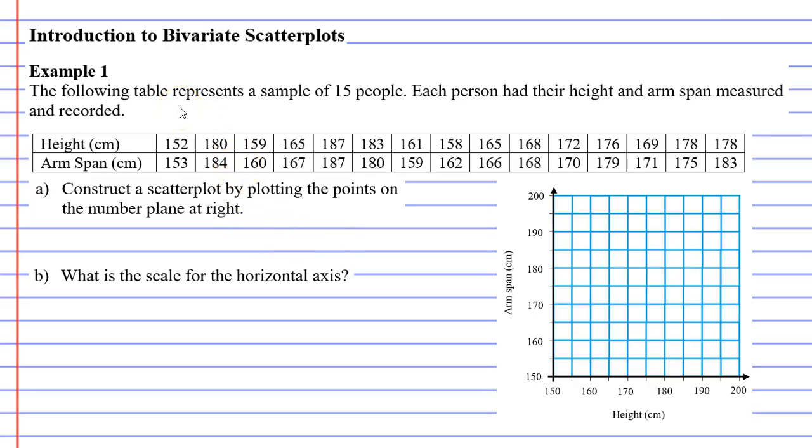We just look at the table one column at a time, and in this particular column, the height is 152, and the arm span is 153. So we find that and we plot it, and it would go roughly here. Then we go to the next column. When our height is 180, our arm span is 184, which would go roughly about here.